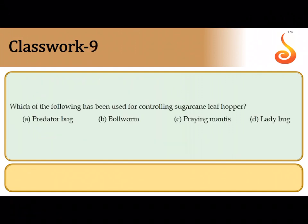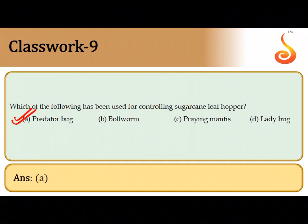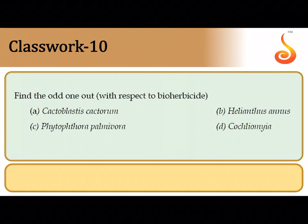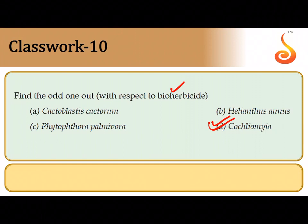The ninth question asks which organism has been used for controlling sugarcane leaf hoppers. Predator bugs have been used to control these leaf hoppers, which cause extensive damage to sugarcane crops — so it is option A. The tenth question asks for the odd one out: all the listed organisms are bio-herbicides — natural agents that destroy unwanted weeds — except Cochleomia, which is a parasitic fly, making it the odd one out.